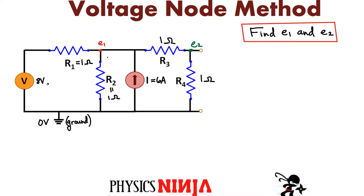Here's my circuit. I've assigned values: the resistors are all going to be one ohm resistors. For the constant voltage supply, this is eight volts, and the constant current I've set to six amps. I've also identified two nodes on this circuit. I've identified node E1 here — my goal is to find the voltage at this node — and also the voltage at E2. For E1, I could have also assigned it to this point, since this is connected by an ideal wire with no resistance, so it doesn't matter where you place E1.